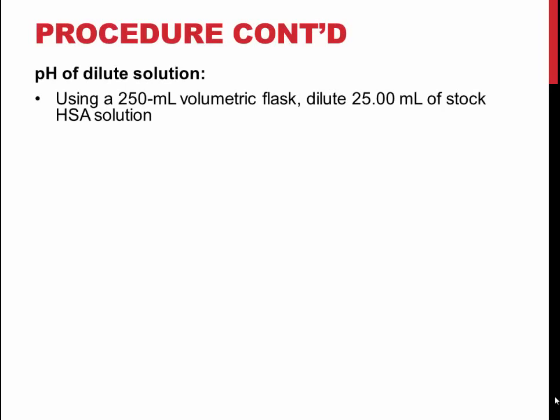Next, prepare a diluted stock solution by pipetting 25 mL of the original stock solution into a 250 mL volumetric flask and fill the remaining volume to the mark with deionized water. Also, reattach the temperature probe to the pH meter which you disconnected for the previous step. Measure and record the pH and temperature of the diluted stock solution.